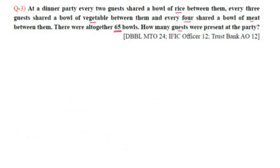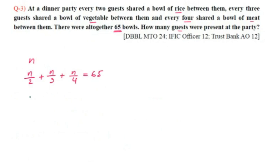Let the number of guests be N. Since every two guests share one bowl of rice, the number of rice bowls is N/2. Since every three guests share one vegetable bowl, vegetable bowls = N/3. Since every four guests share one meat bowl, meat bowls = N/4. Total bowls: N/2 + N/3 + N/4 = 65.